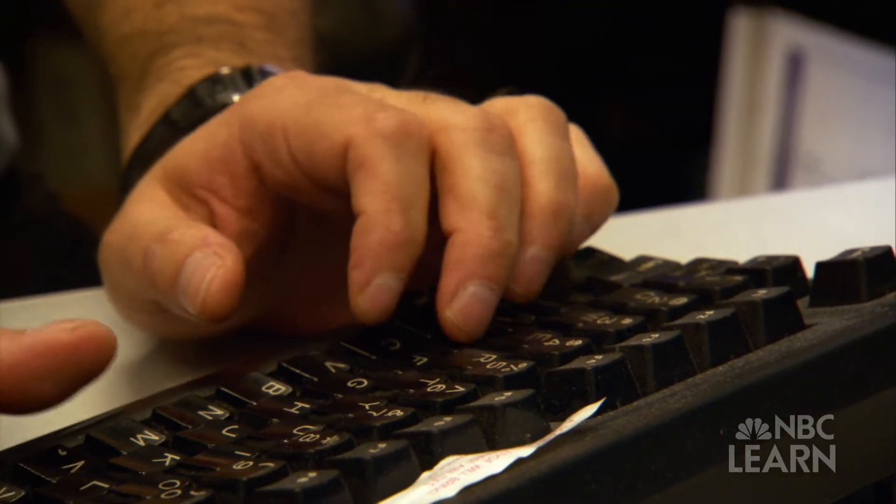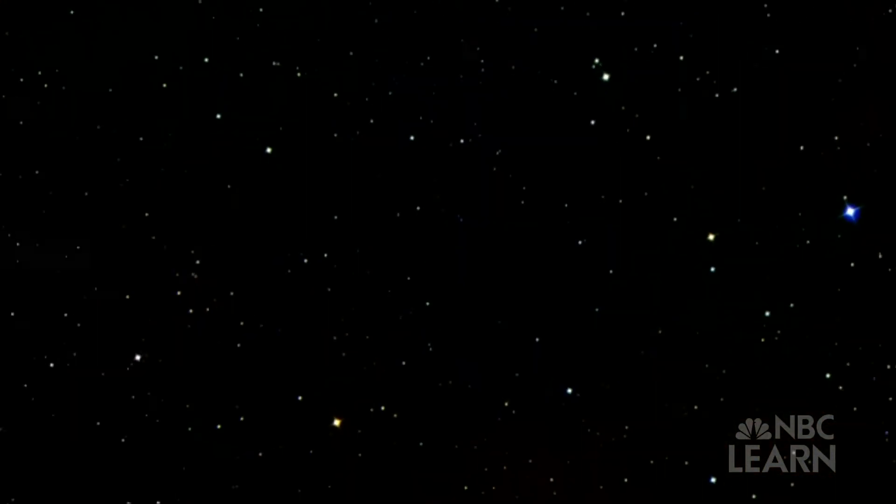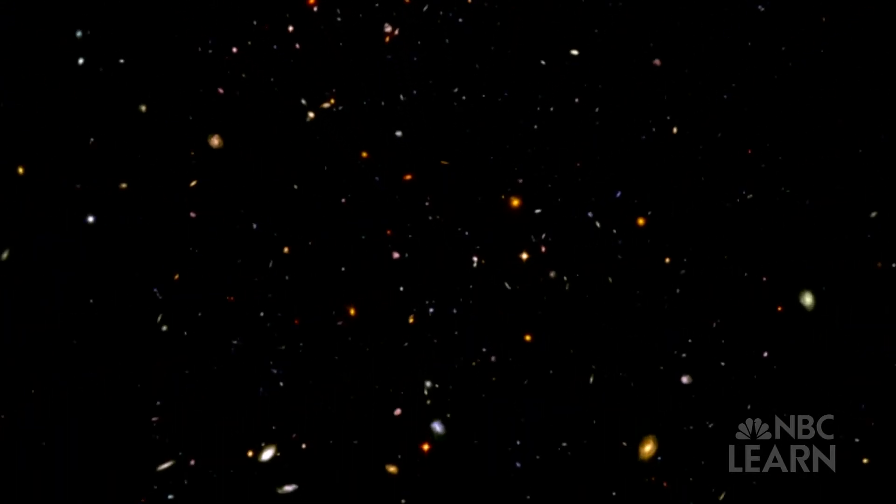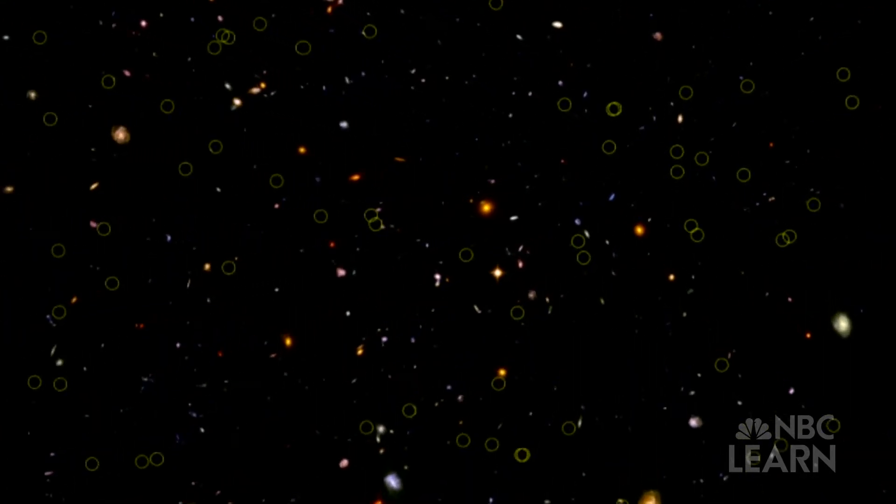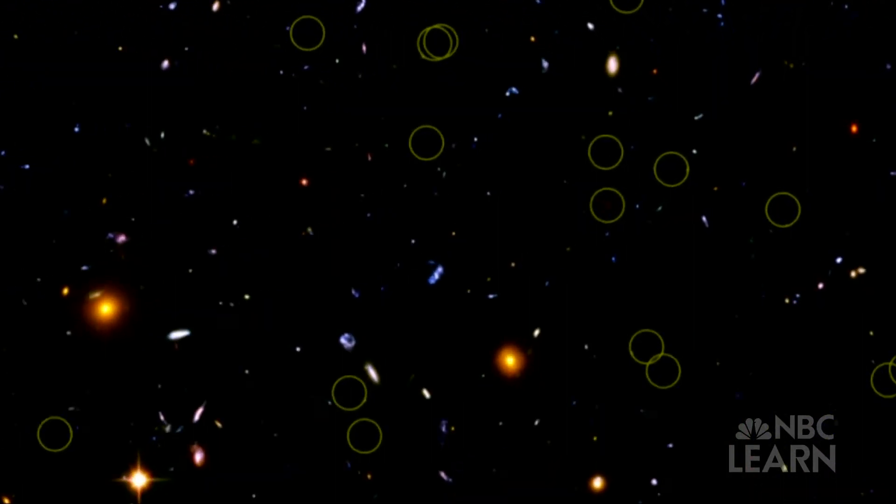He and other astronomers have been able to measure the size and mass of hundreds of these exoplanets, though some are thousands of light years away, meaning that even if we could travel at the speed of light, it would still take us thousands of years to get there.